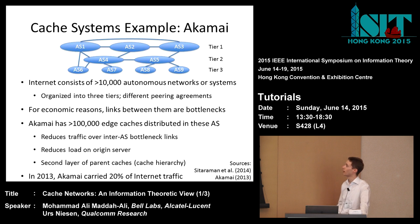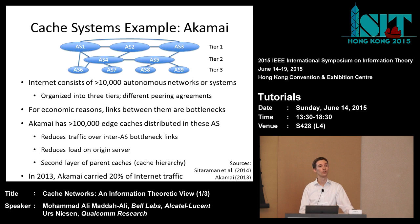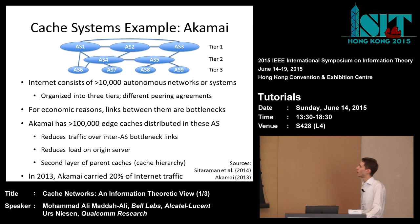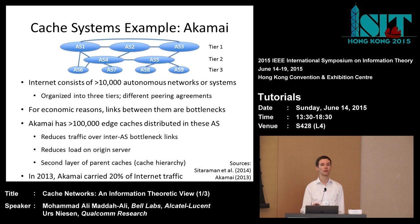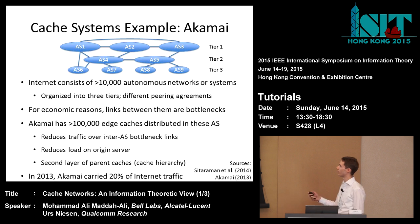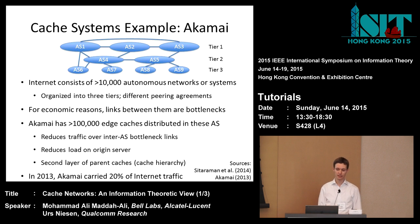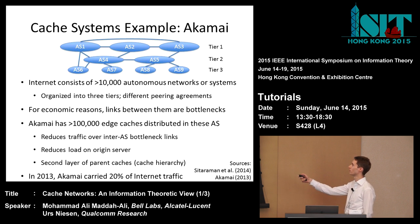Another example is Akamai, which started in the late 90s with caching for websites and now also does video. The internet consists of approximately 10,000 autonomous systems (ASs), each operated by a different ISP or entity, organized into three tiers: tier one, tier two, and tier three autonomous systems with different peering agreements.